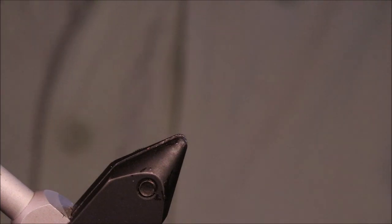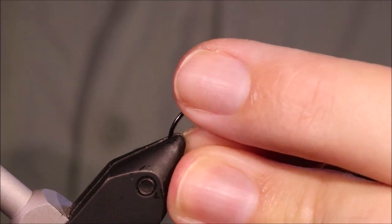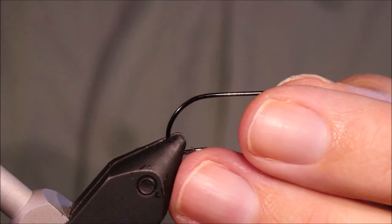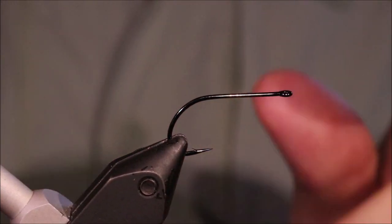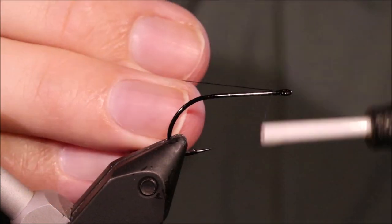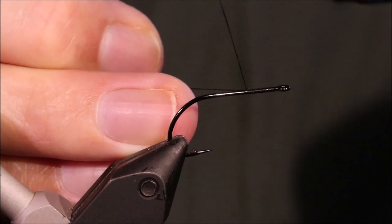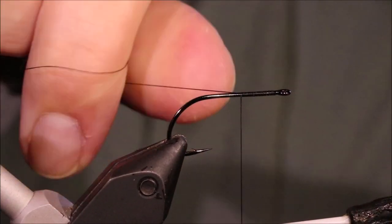It's just a jazzed up foam spider really, nothing spectacular. I'm tying it on a size 6 hook, this is a size I'd be quite happy using for smallmouth bass, although you'll still catch the bluegills on it.